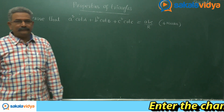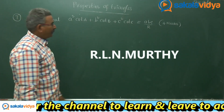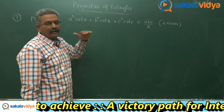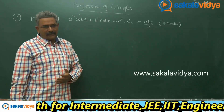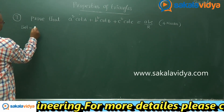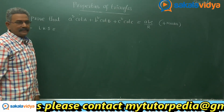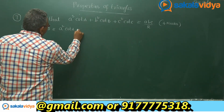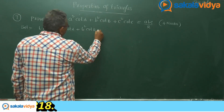Let us solve one more problem. We need to prove that a² cot A plus b² cot B plus c² cot C equals abc/R. Let us solve this problem using the sine rule. Consider the left hand side: a² cot A + b² cot B + c² cot C.